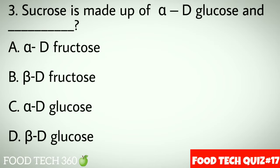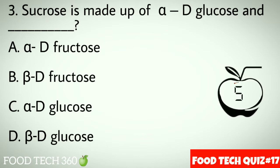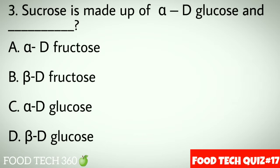Question number 3: Sucrose is made up of alpha-D-glucose and dash. A. Alpha-D-fructose, B. Beta-D-fructose, C. Alpha-D-glucose, D. Beta-D-glucose. Correct answer: B. Beta-D-fructose.